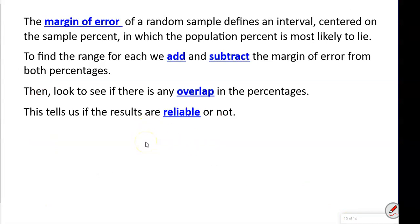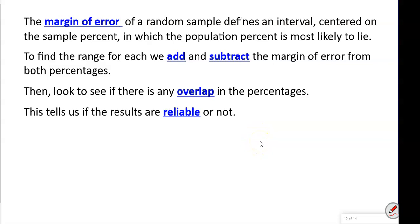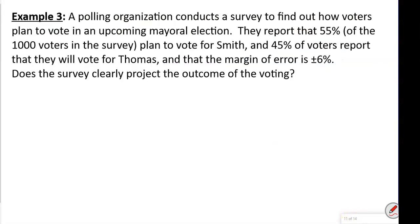Now we'll talk about margin of error. The margin of error of a random sample defines an interval centered on the sample percent in which the population percent is most likely to lie. To find the range, we add and subtract the margin of error from each percentage, then check for overlap. If there is overlap, the results are inconclusive. If there is no overlap, the results are conclusive.